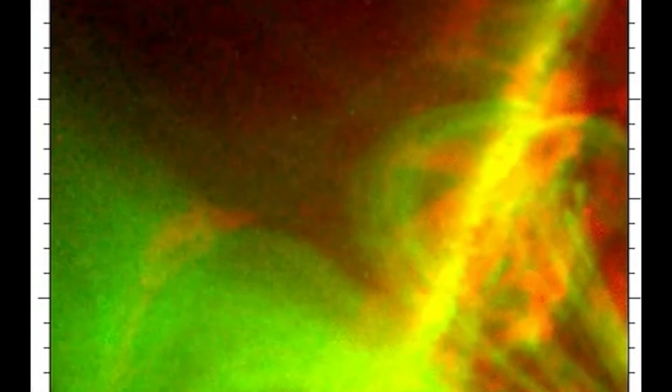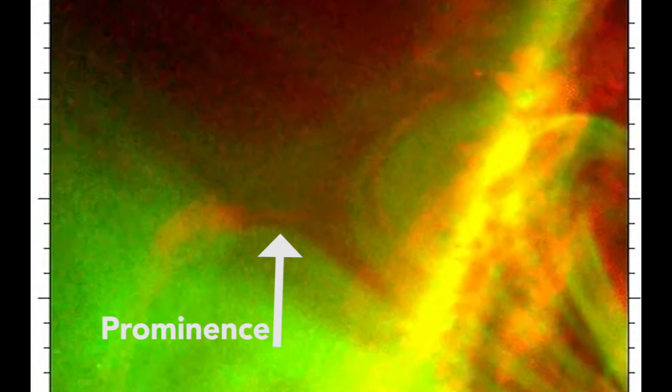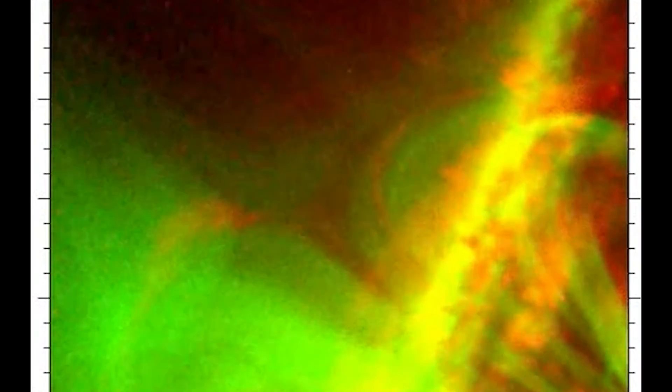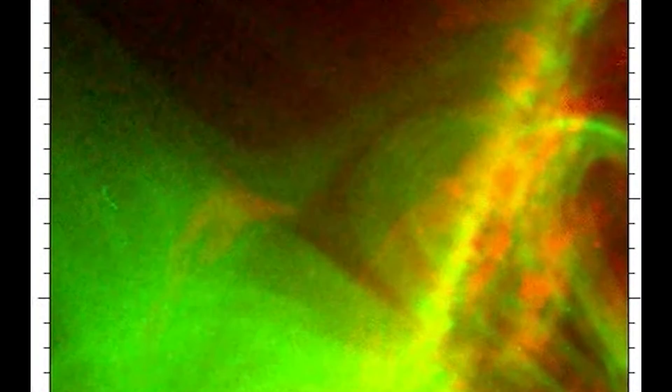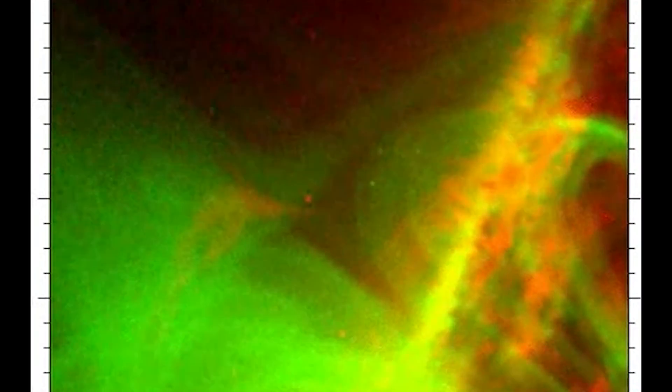The data showed a prominence, a large loop of plasma moving up from the visible surface of the Sun, the photosphere. In a series of images taken over an hour, the prominence could be seen falling back into the photosphere.